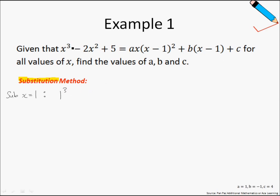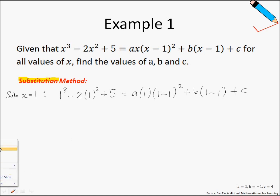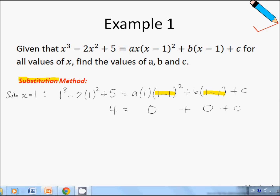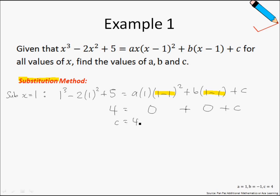Substituting x equals 1 into the left-hand side: 1 cubed minus 2 times 1 squared plus 5 equals a times 1 times (1 minus 1) squared plus b times (1 minus 1) plus c. Both the a-term and the b-term become 0, so on the right-hand side we are only left with c. On the left-hand side, 1 minus 2 plus 5 equals 4. Therefore, c equals 4.